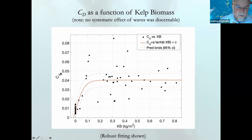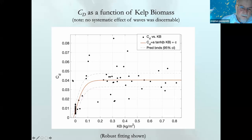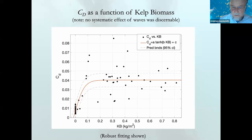Plotting inferred drag coefficient as a function of kelp biomass using robust fitting, we see that the drag starts at canonical values and quickly rises to an asymptotic value of about 0.04. This is much lower than people like George Jackson had assumed from earlier flow measurements in kelp forests. The saturation at a relatively low biomass suggests sheltering — the roughness elements are so close together that many are sitting in the wake of another plant and not seeing the mean flow.